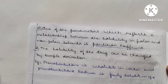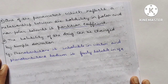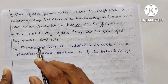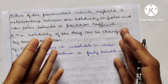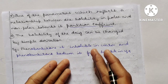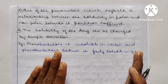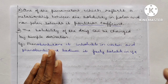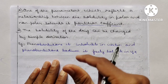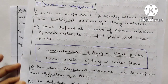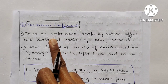One parameter that reflects the relationship between solubility in polar and non-polar phases is the partition coefficient, which we will discuss next. The solubility of a drug can be changed by simple derivation. For example, phenobarbitone is insoluble in water, but if we convert it to phenobarbitone sodium, it becomes freely soluble in water. Phenobarbitone is used for central nervous system disorders. By adding sodium, it forms phenobarbitone sodium, which is freely soluble in water.